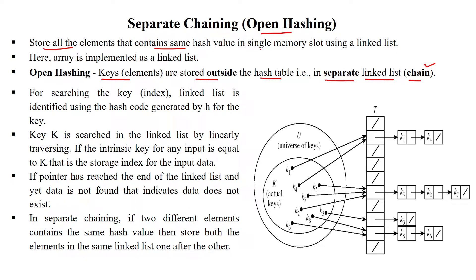All elements containing the same hash value are stored in a single memory slot — that is, a single bucket — using the linked list concept. Here the array data structure is implemented as a linked list to store the given elements. For searching a key, the linked list index is identified using the hash code generated by the hash function for the given input key.